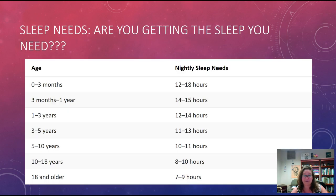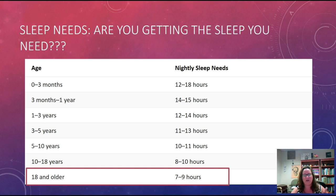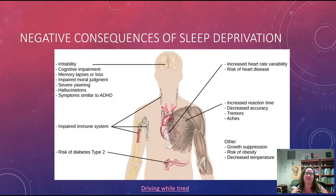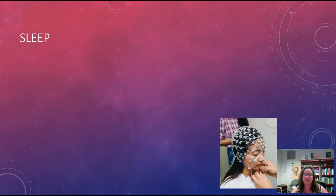Adults 18 and older should get around seven to nine hours of sleep. Sleep deprivation causes system-wide problems — it can affect the heart, reaction times, immune system, and brain, making you more irritable with trouble with memory. Driving tired or fatigued can be just as dangerous as driving impaired from substances.